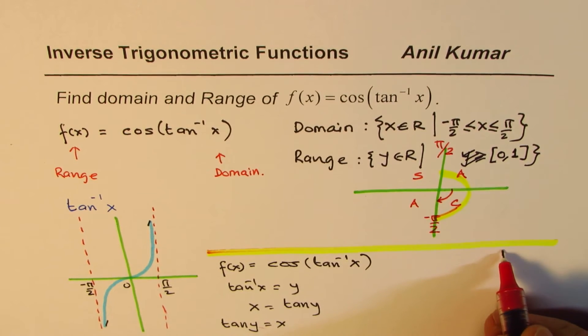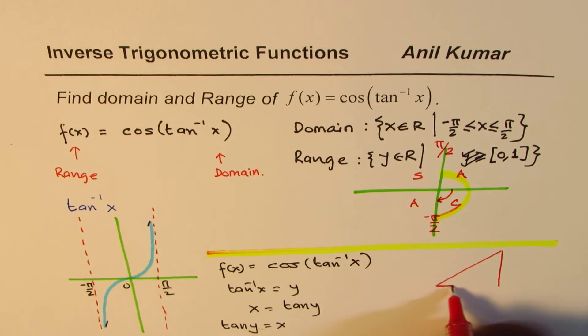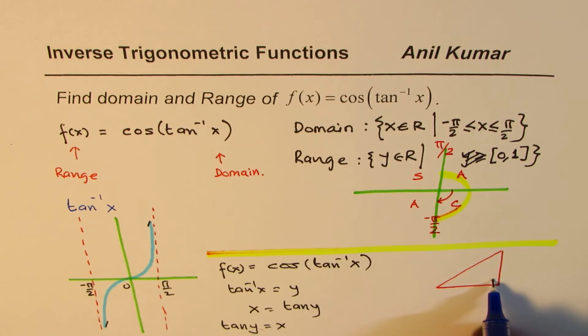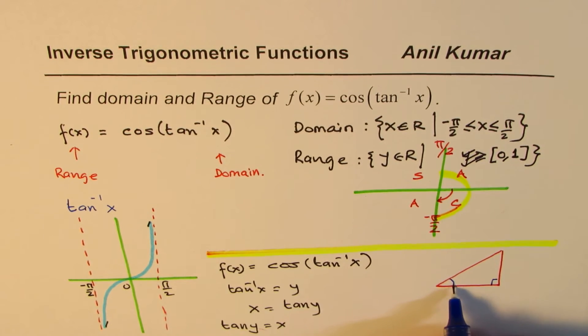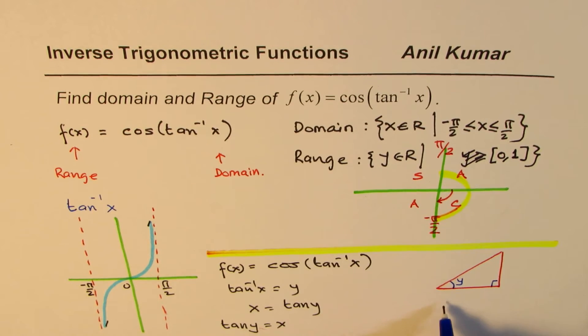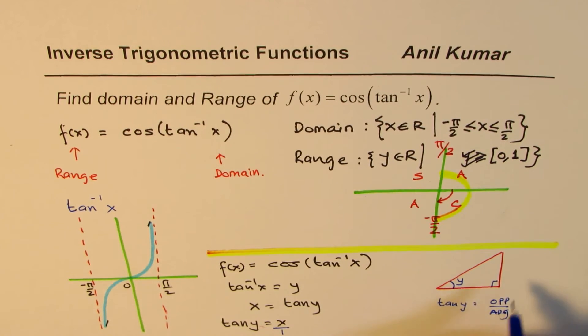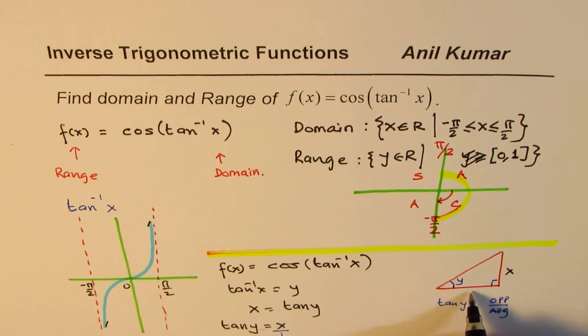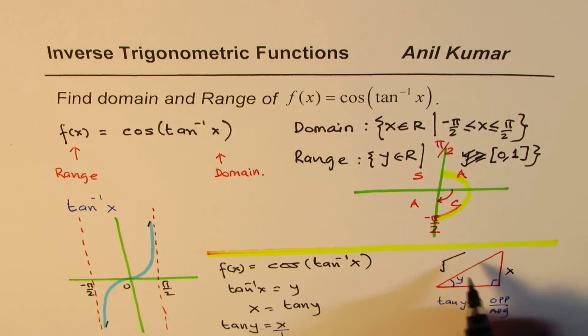It really means that if I have a right-angle triangle here, tan(y) is our angle. Tan(y) is what? We know tan(y) is opposite over adjacent side. So suppose it is x, you could treat this as x over 1. So let me write this as x and adjacent is 1. Now since this is right angle triangle the hypotenuse will be √(x²+1).